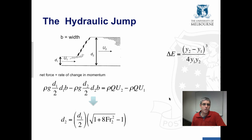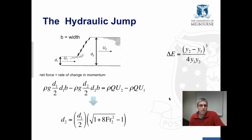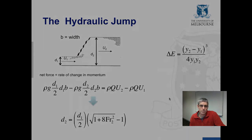That's all I want to cover with hydraulic jumps. You can go through the equations in your own time and I recommend you do that. Conceptually, it's the momentum equation we use to calculate the downstream depth if we know the upstream depth, and we then use the specific energy equation to work out what the energy loss is across the hydraulic jump. That's the end of part two — you'll find part three online, which deals with gradually varying flow.